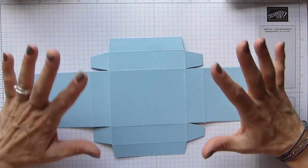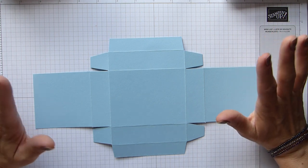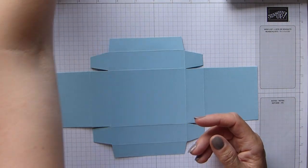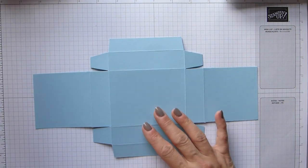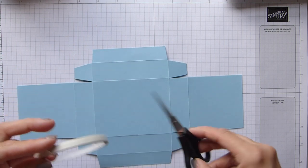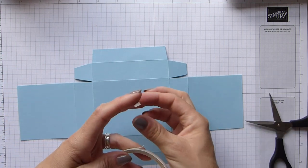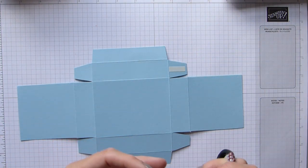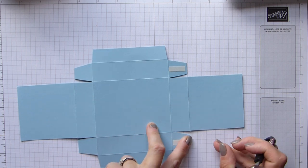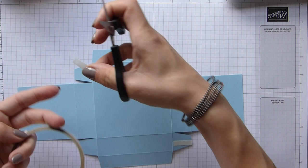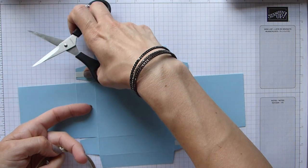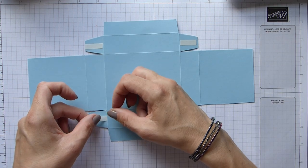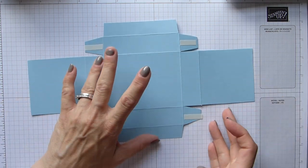All we need to do now is put adhesive on these four tabs. I'm going to use tear and tape because I am the tear and tape queen. It's just so much easier. You can use wet glue if you have the time and patience.